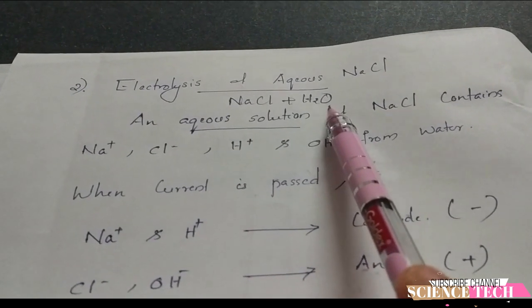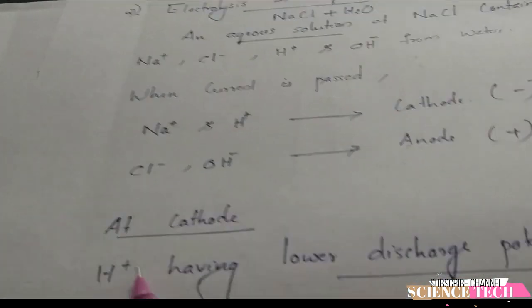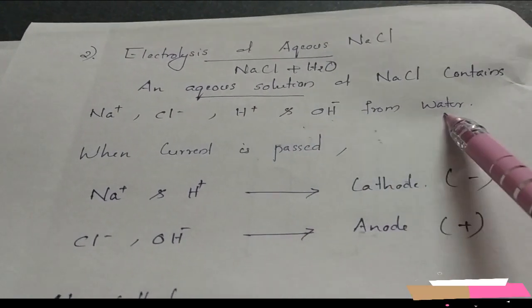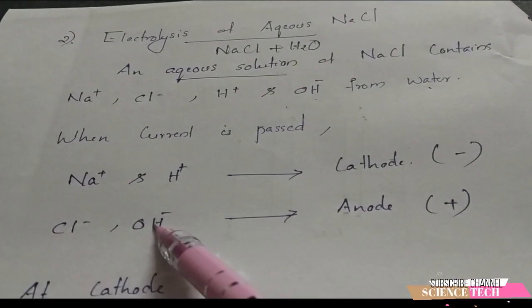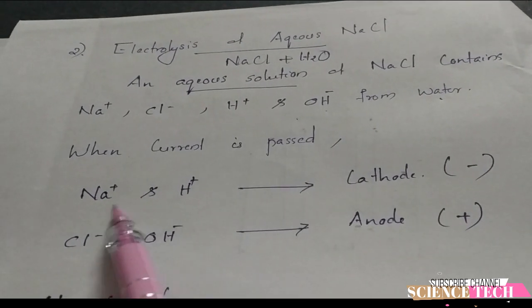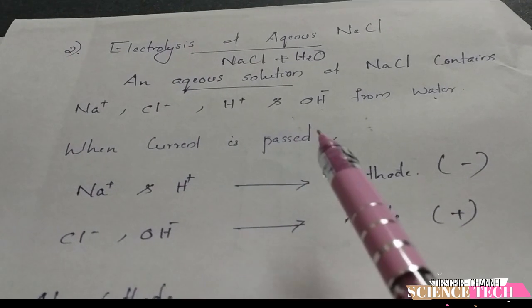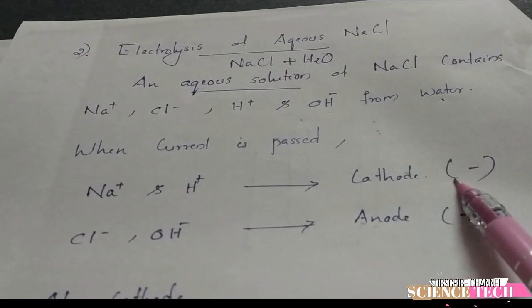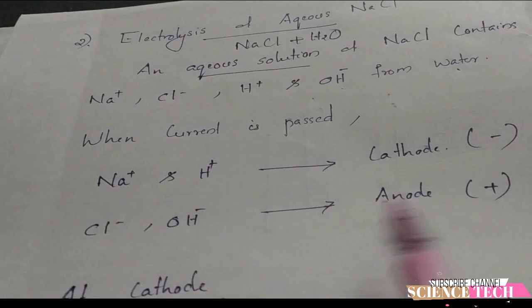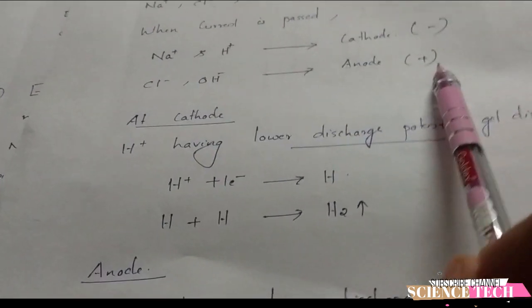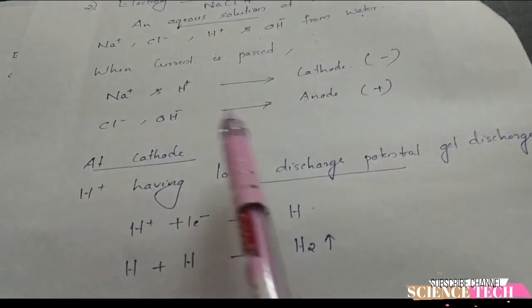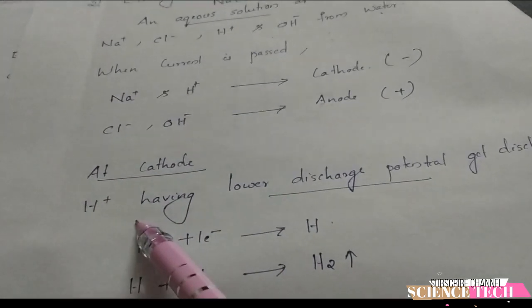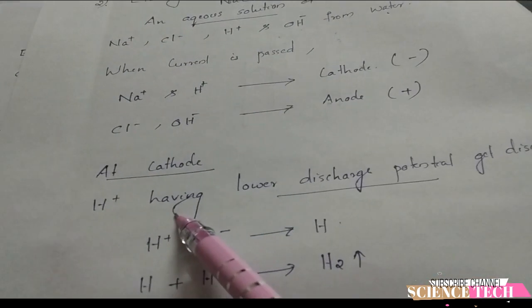In aqueous sodium chloride, the sodium chloride dissociates into Na+ and Cl- ions, and water partially ionizes into H+ and OH- ions. So at the cathode, both Na+ and H+ ions are moving towards it. At the anode, both Cl- and OH- ions are moving towards it. We need to determine which ion gets discharged at each electrode.